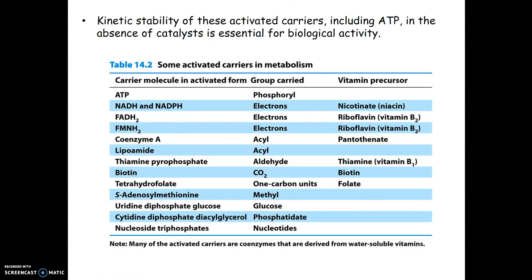These are various kinds of activated carriers: ATP is a carrier for our phosphoryl group, and the electron carriers we've discussed are NAD+, NADH, FAD, and NADPH. What you'll notice is that a lot of these carrier groups also have vitamin precursors, and many of these are actually B vitamins.